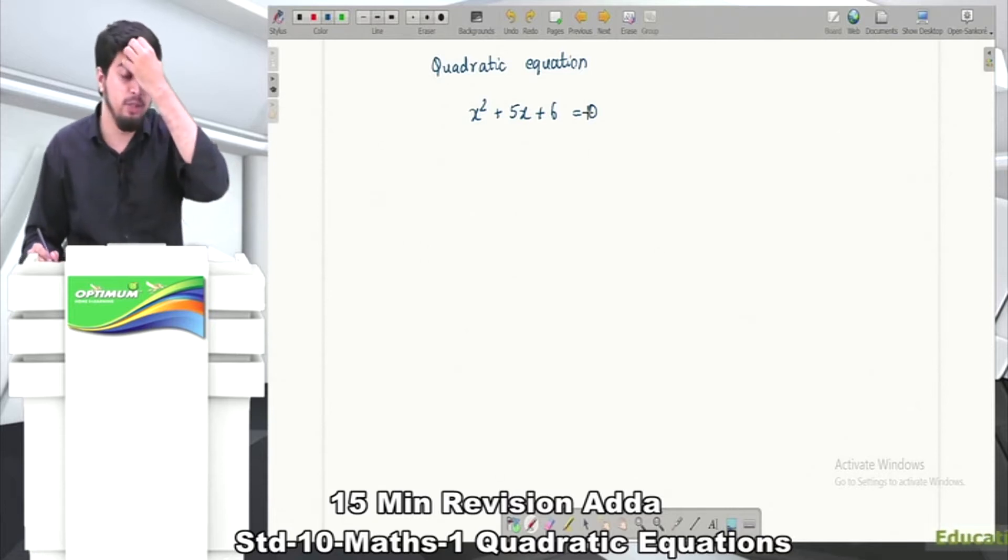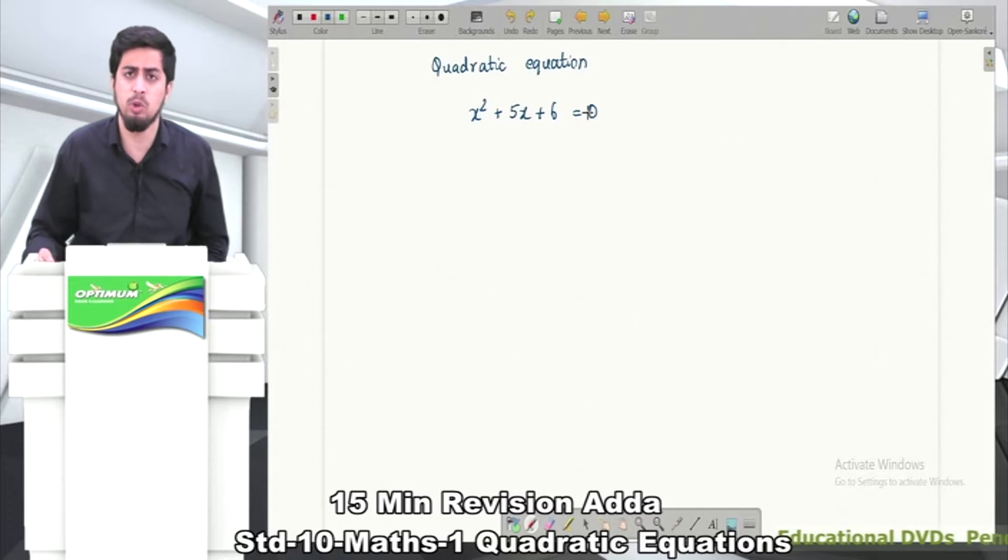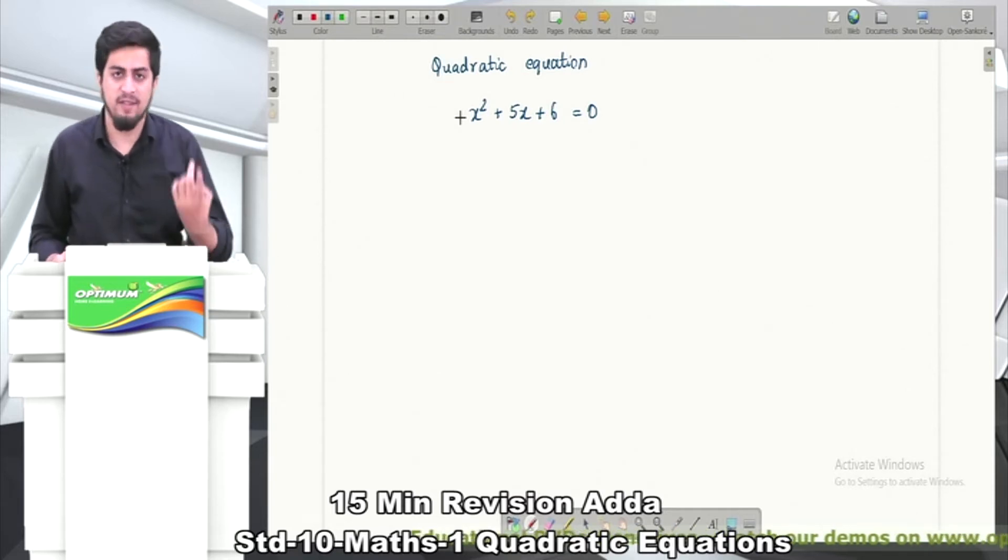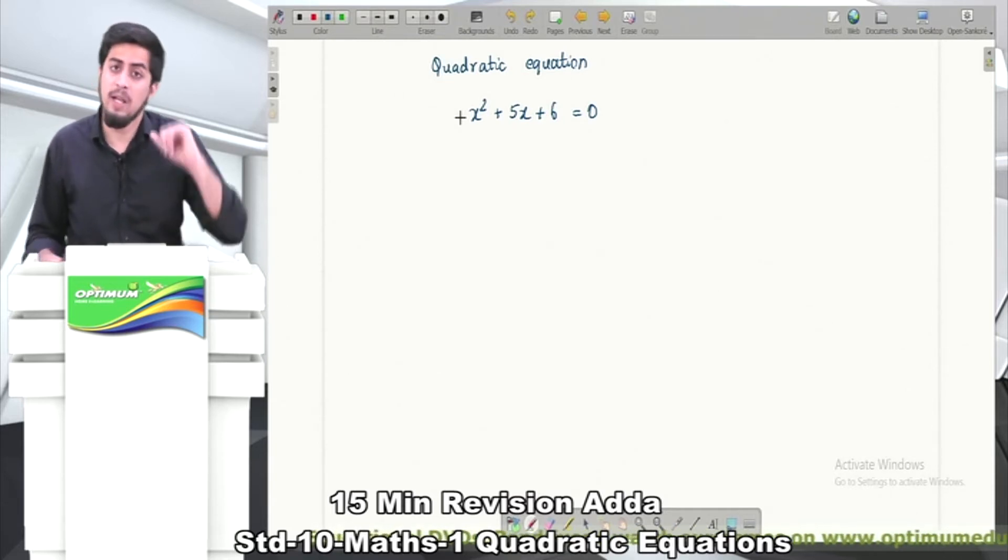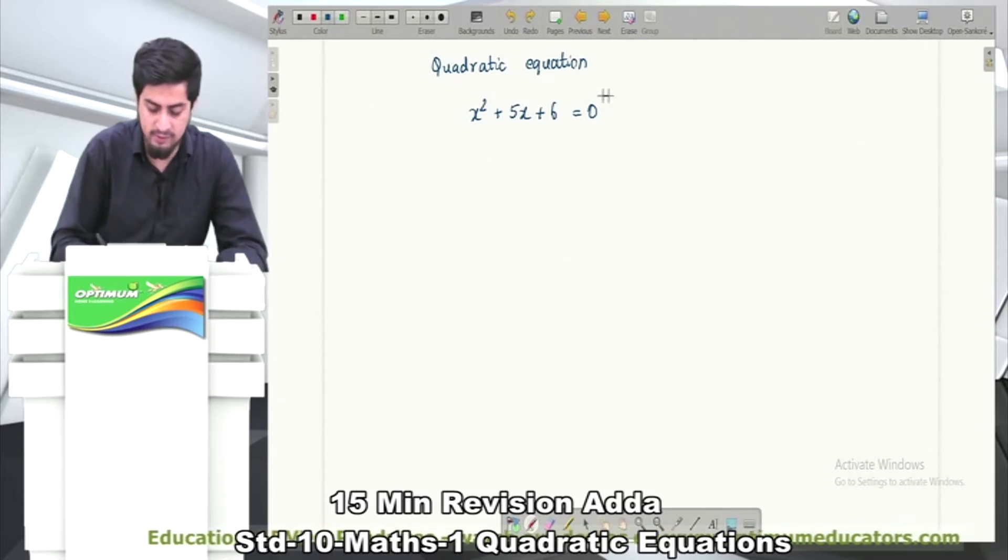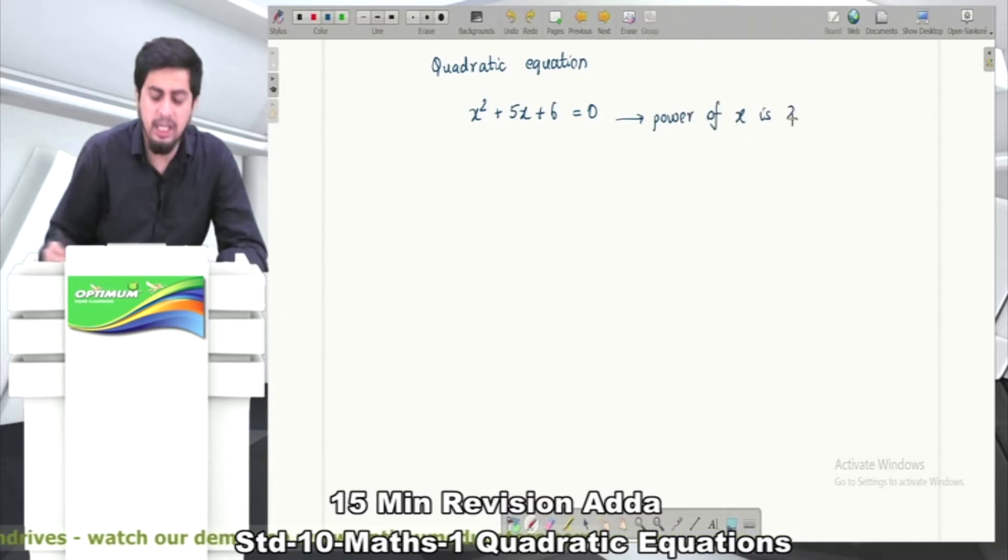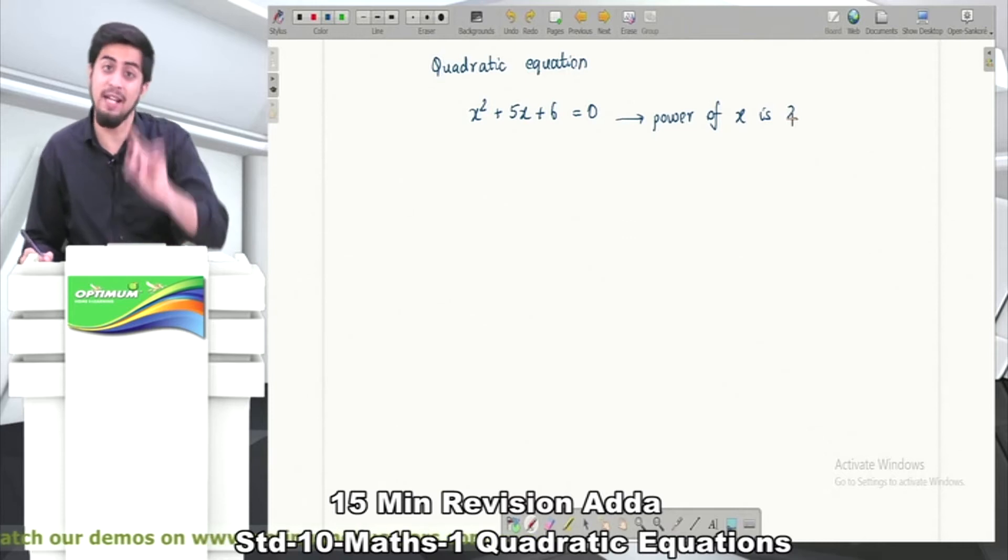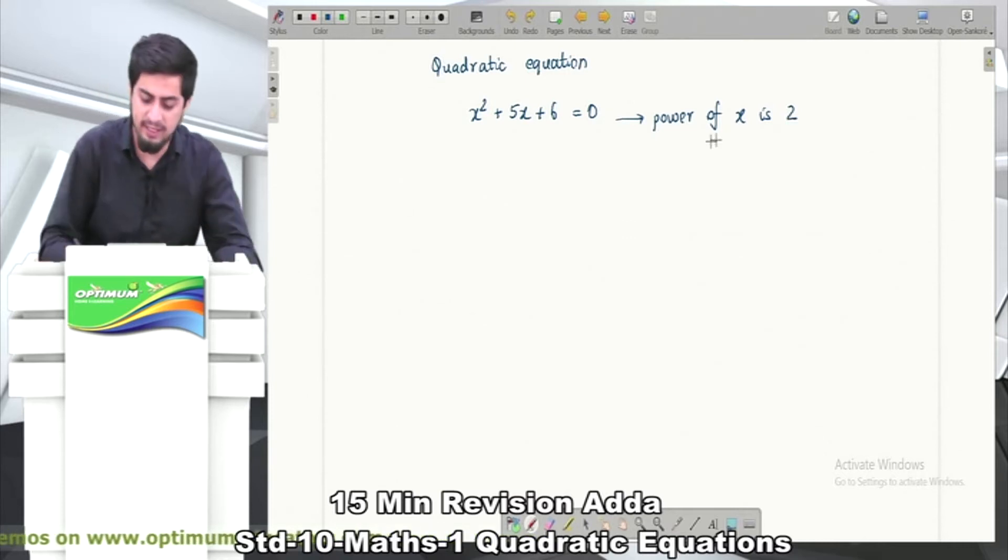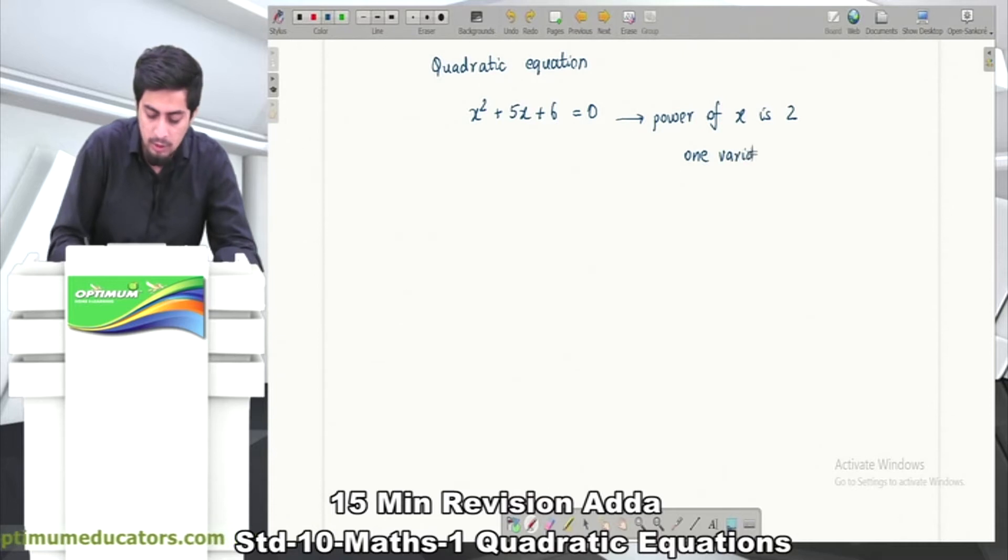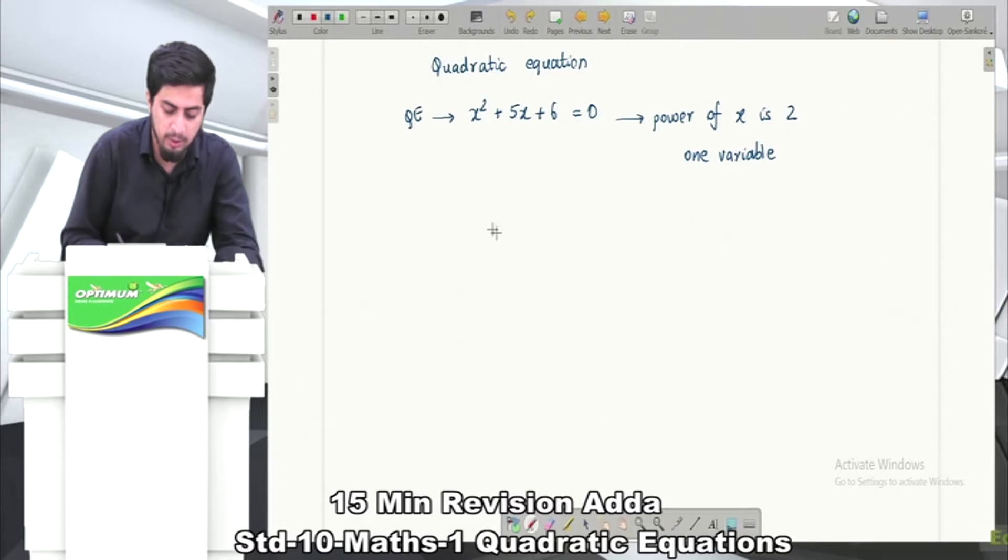What do you mean by quadratic equation? A quadratic equation is one where the variable, for example in this case the variable is x, has a maximum power of 2. So 2 is the maximum power. This is a quadratic equation in one variable. How many variables are there? One variable x. This is a quadratic equation.